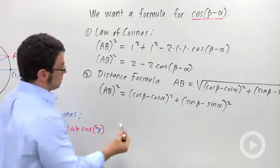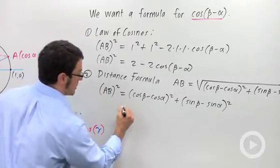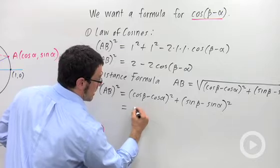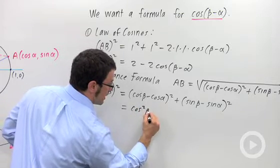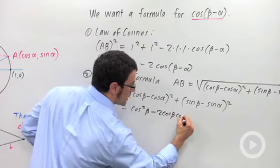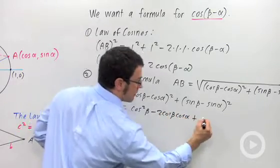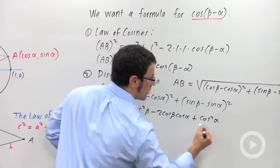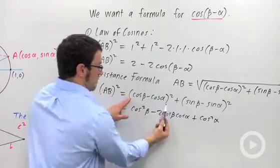Now I've got to expand this. Okay, it's going to be a mess, but prepare yourself. I'm expanding this. I get cosine squared beta minus 2 cosine beta cosine alpha plus cosine squared alpha. Alright, that's the expansion of this term.